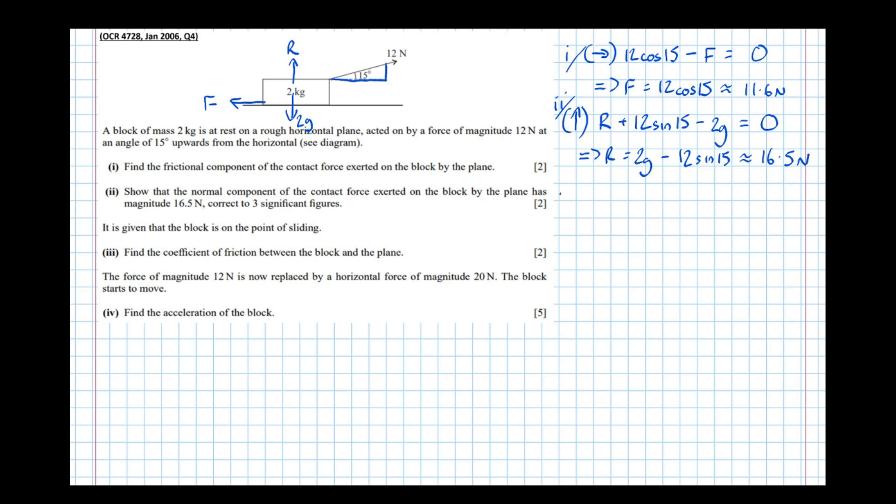Just a technical point there that hopefully cleared things up. So part three is given that the block is on the point of sliding. So that means friction's at its maximum. So what I like to write, instead of F equals μR, which we've just said isn't quite correct, is F_max, the maximum friction, equals μR. And at this point, we're at maximum friction because the block is on the point of sliding.